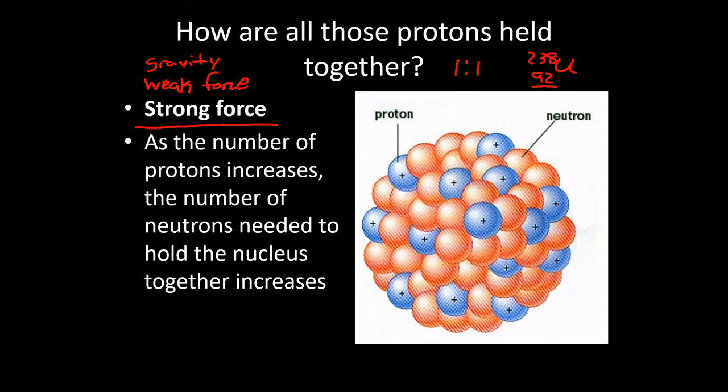This is also, by the way, why the only element in existence that can exist without neutrons is hydrogen. Hydrogen, or protium is what it's sometimes called, the isotope of hydrogen with just a single proton. Well, it's just one particle in the nucleus. You have just the one particle. You don't need a neutron. You don't need any glue, because there's no other charge repelling that one proton.